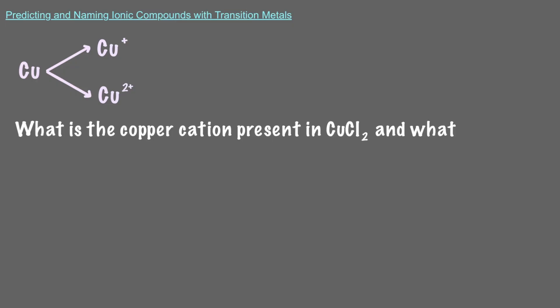Let's try working with a different transition metal, copper. Copper typically makes one of two different cations, Cu+ and Cu2+. What is the copper cation present in CuCl2, and what is the name of the compound?